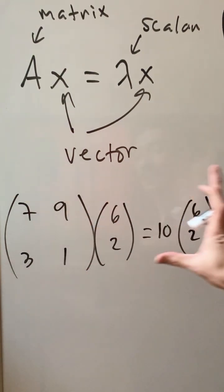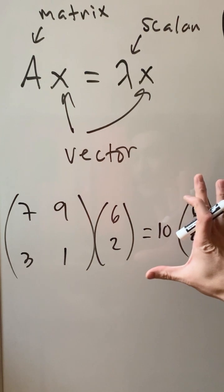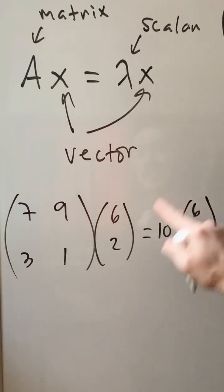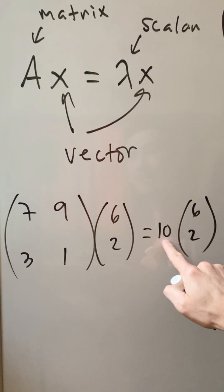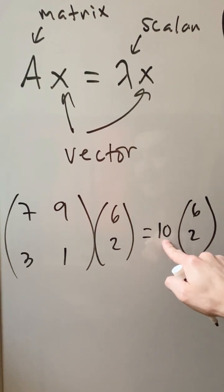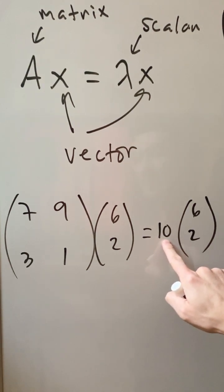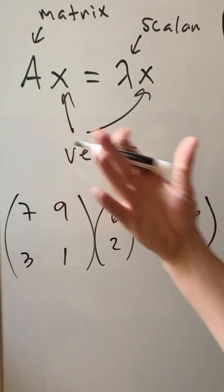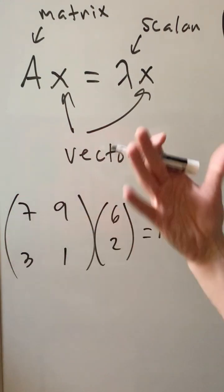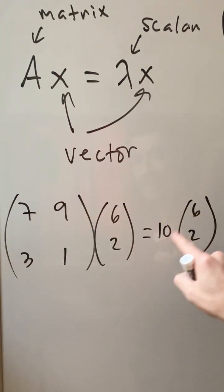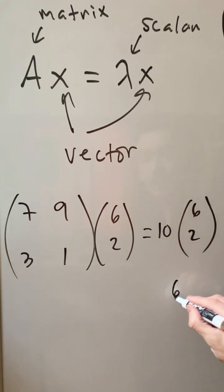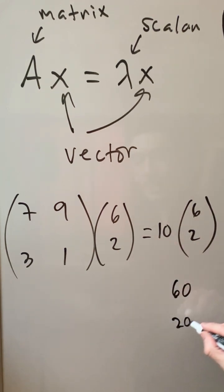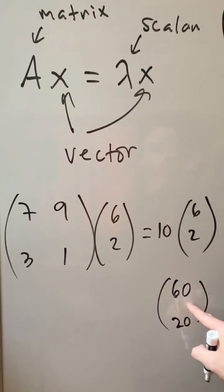Let me convince you that this actually works. This scalar — think of it as a coefficient, and coefficients can be dropped inside into these objects called elements. Let's distribute — it's the distributive property. Let's go 10 times 6, and 10 times 2. Keep it wrapped up; this is still a vector.